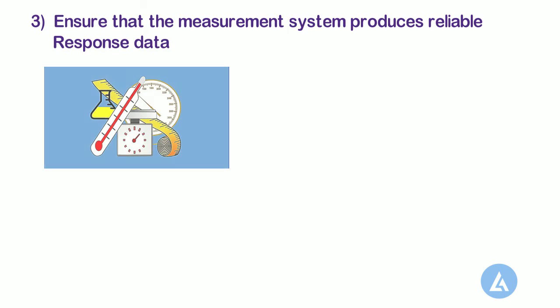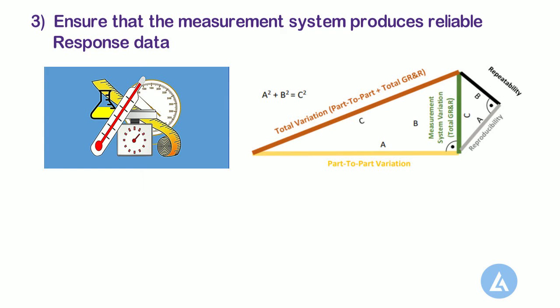Third, ensure that the measurement system produces reliable response data. If the variability in your measurement system is too high, then your experiment may lack the power to find important effects.